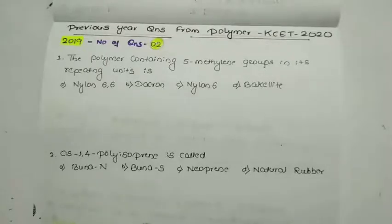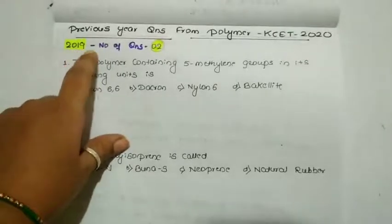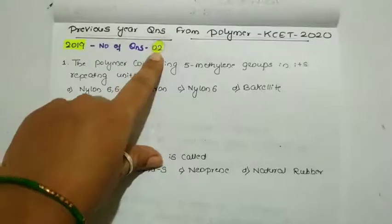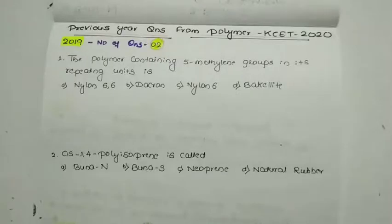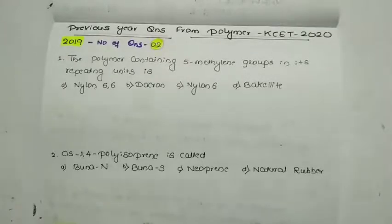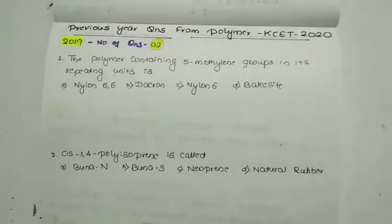As I already mentioned, the possible number of questions from this chapter: for 2019, about two questions appeared. Around one to two questions will definitely appear for Karnataka CET 2020 — at least one question will definitely appear. I have discussed in the previous video about the homopolymer, condensation polymer, and about rubber. Those are very important because if you go through all the question papers repeatedly, the questions have appeared based on those topics only.